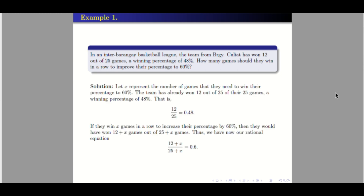Let X be the number of games that they need to win in a row to increase their winning percentage to 60%. Based on the given information, they have won 12 out of 25 games and the percentage is 48%, so 12 over 25 is equal to 0.48. Now, if they win X games in a row to increase their percentage to 60%, then they would have won 12 plus X games out of 25 plus X games, because the denominator is the total number of games. In a row means consecutive.